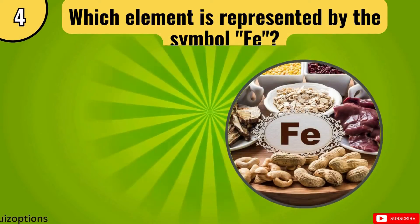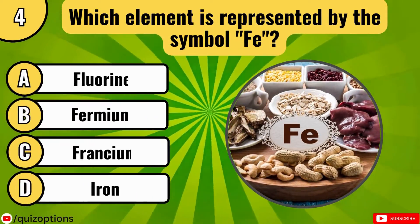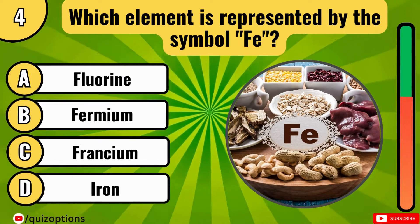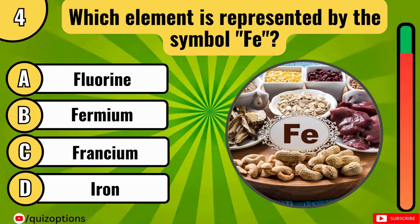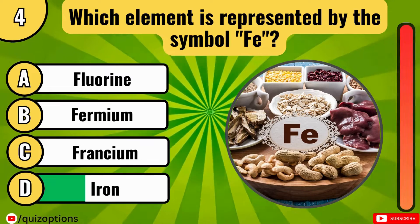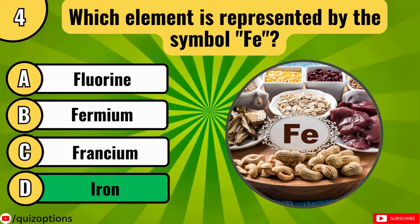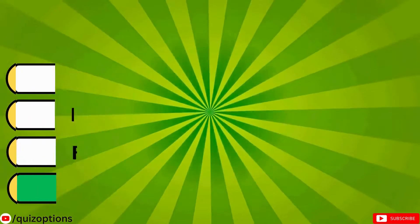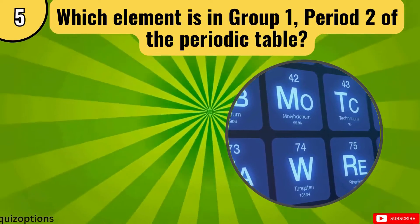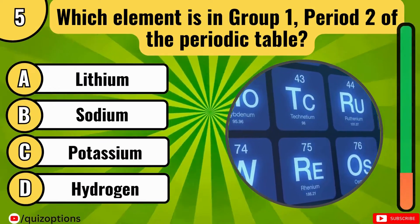Which element is represented by the symbol Fe? Iron is represented by Fe. Which element is in group 1, period 2 of the periodic table?